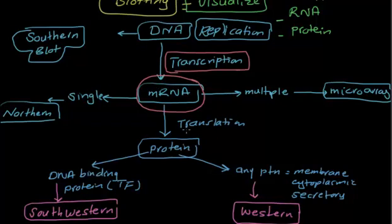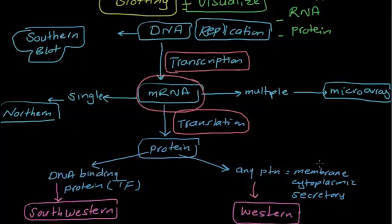Third, if you want to see protein at the translation level, there are two types. If the protein is a DNA binding protein, go with Southwestern blot — that is the only case you use Southwestern. If the protein is a membrane-binding protein, cytoplasmic protein, or secretory protein like insulin, go with Western blot.